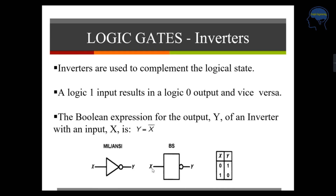Next is an inverter. In your buffer, if you put a NOT sign, it will become an inverter. Inverters are used to complement the logic state — whatever input you give, it will give the complement of the input. If you are giving 0 input, you will get 1 as the output. And if you give 1 as the input, your output will be 0. So the Boolean expression for the output Y is equal to X bar, which is the inversion of your input. This is the symbol and truth table of your inverter.